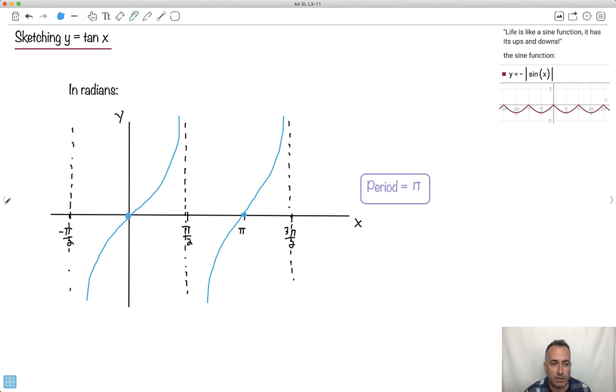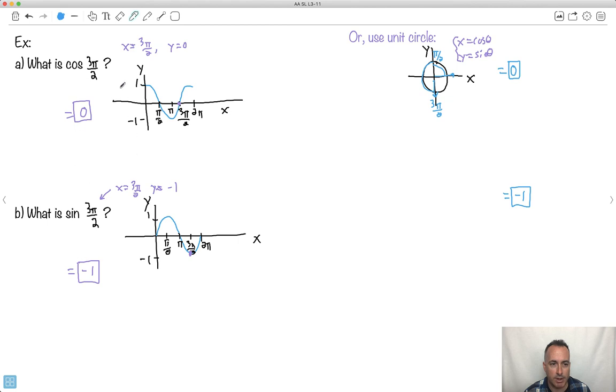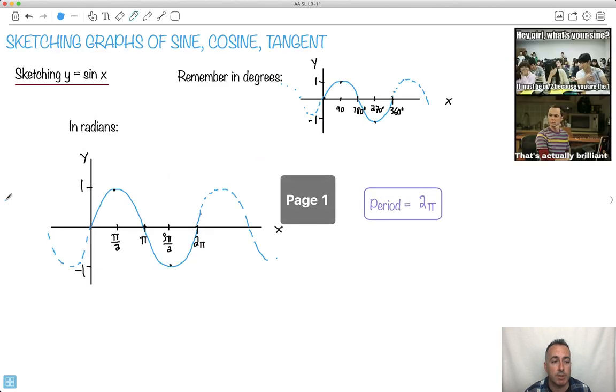So you see, we could use the graphs in order to try to get values. Although I would think it's probably easier and quicker to do it using the unit circle. But the graphs are going to be useful later on when we're doing transformations. There we go. Those are the graphs of sine, cosine, and tan. So it's going to be used as a given.